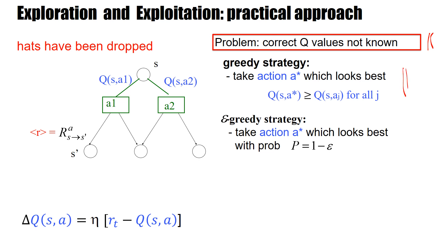This greedy strategy is not good, as we have seen in the simple example. On the other hand, we don't want to explore equally. So the first idea is to play epsilon-greedy. That means most of the time you take the action which looks best — the greedy choice. If there are 10 different actions, the nine other suboptimal actions are each taken with equal probability epsilon over nine. Epsilon-greedy is a very popular strategy.